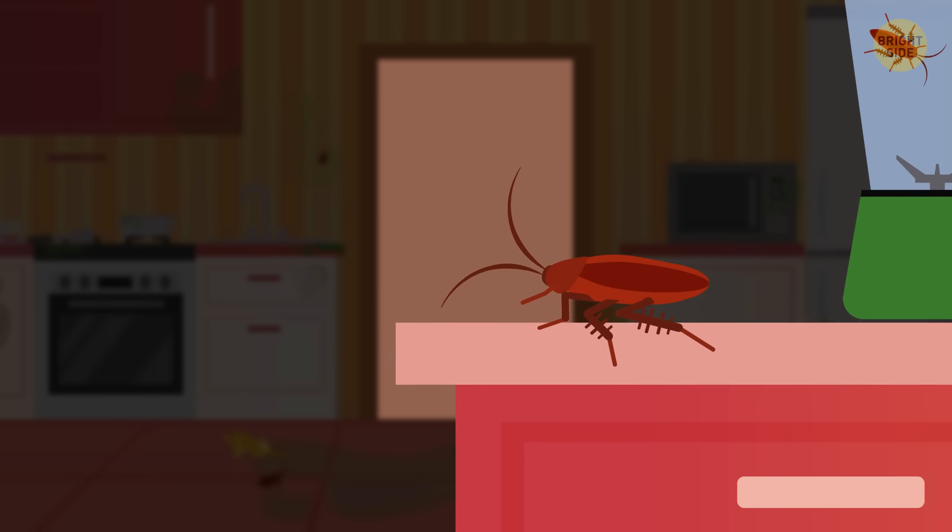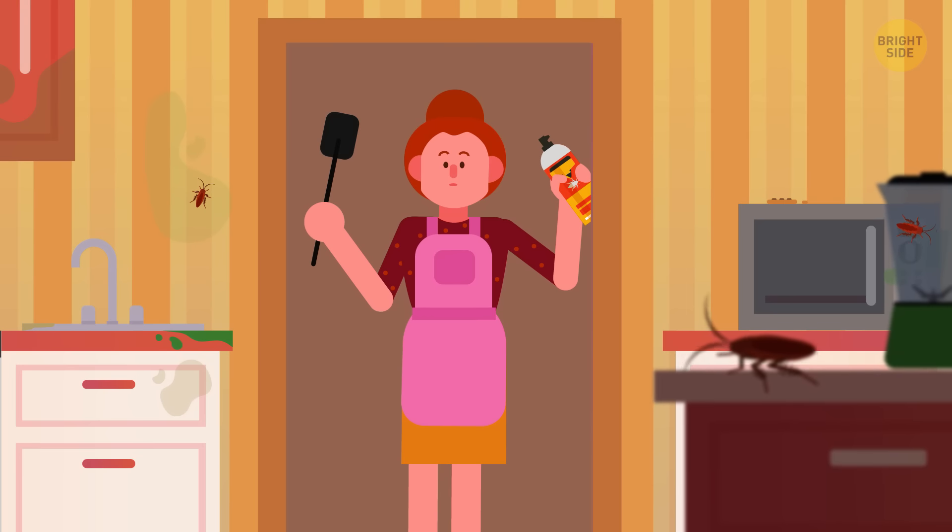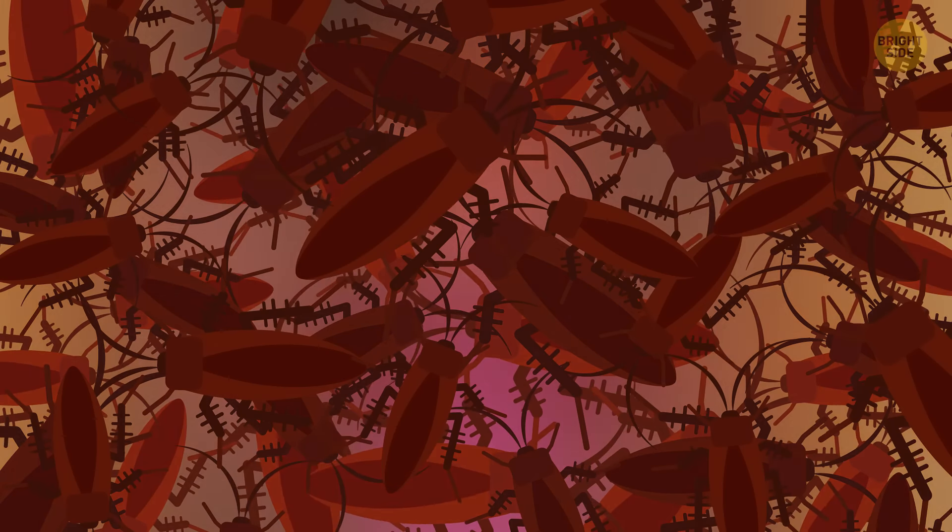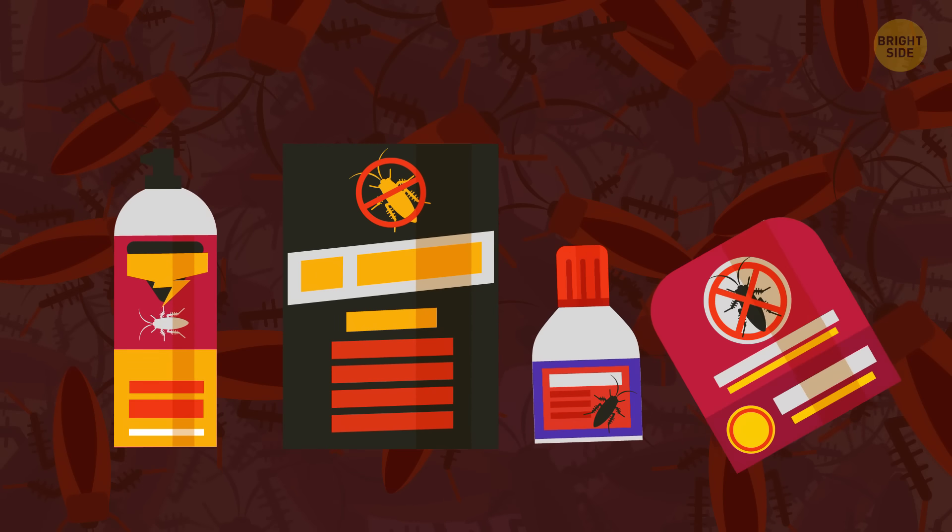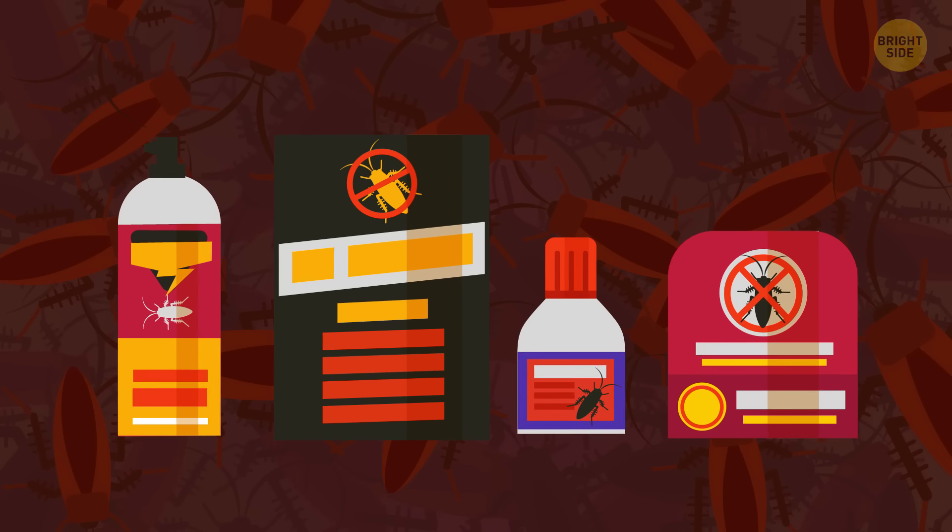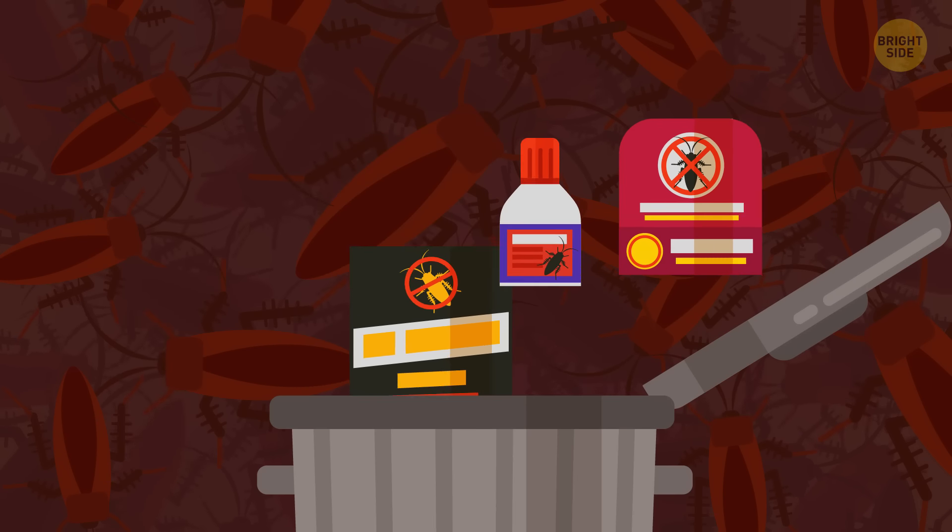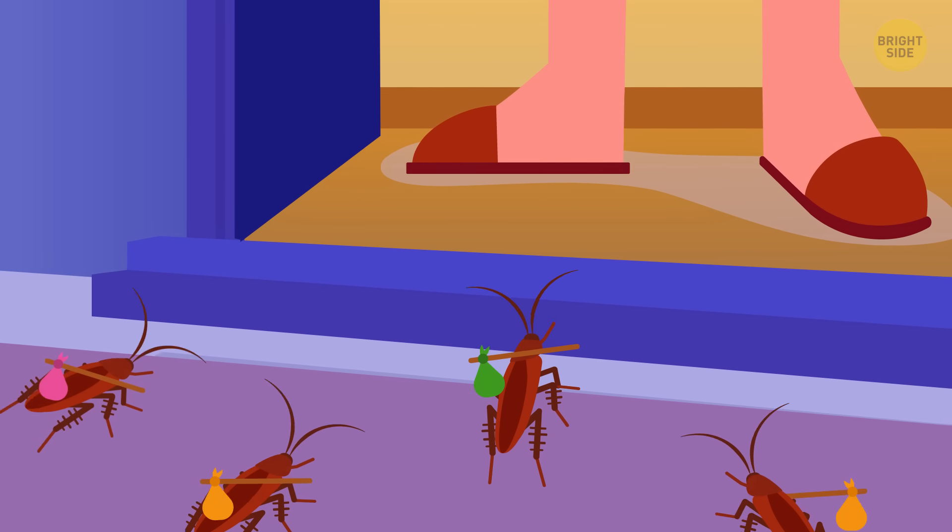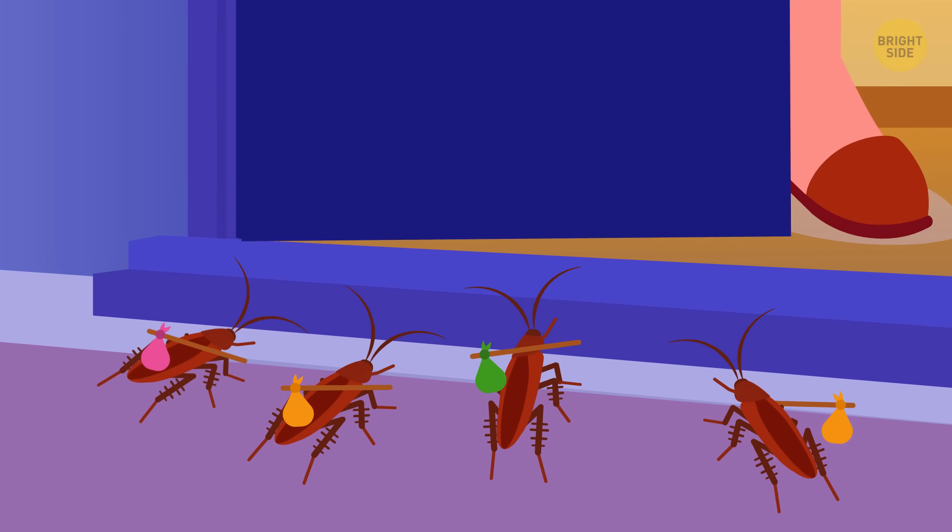Cockroaches are unsanitary and annoying pests that are unwelcome guests in any home. But the smelly and expensive pesticides out there on the market are just as unpleasant and unsafe. So ditch the toxic chemicals and try these 100% natural ways to keep roaches out of your house for good.